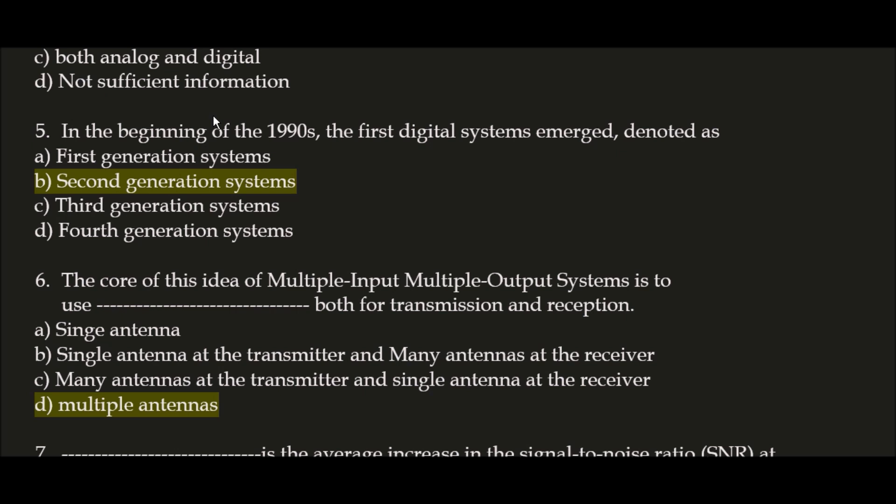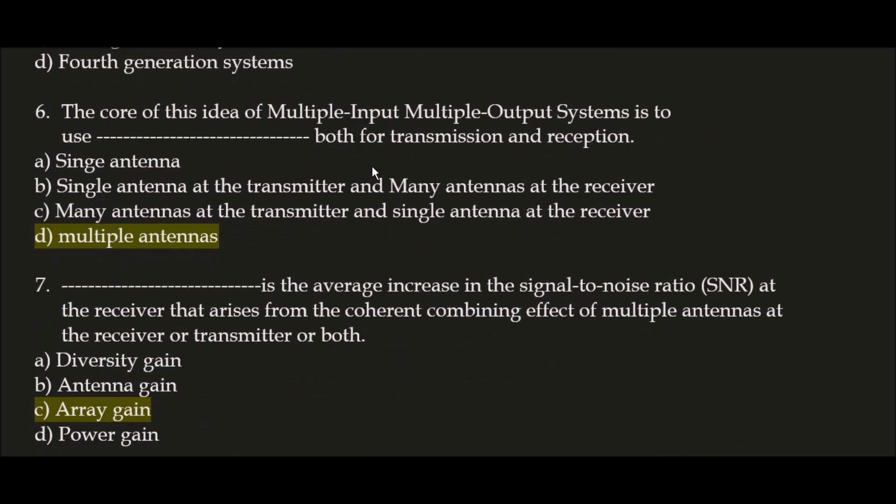Next question: in the beginning of the 1990s, the first digital system emerged denoted as — option A: first generation, option B: second generation, option C: third generation, option D: fourth generation. The correct answer is option B: second generation systems.